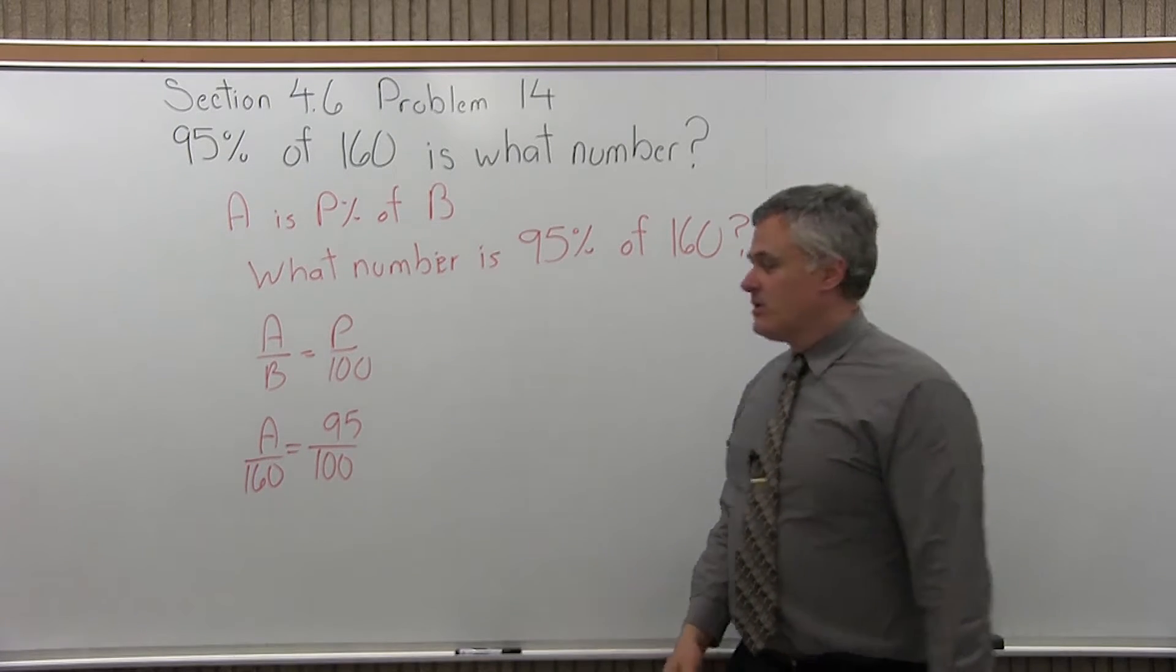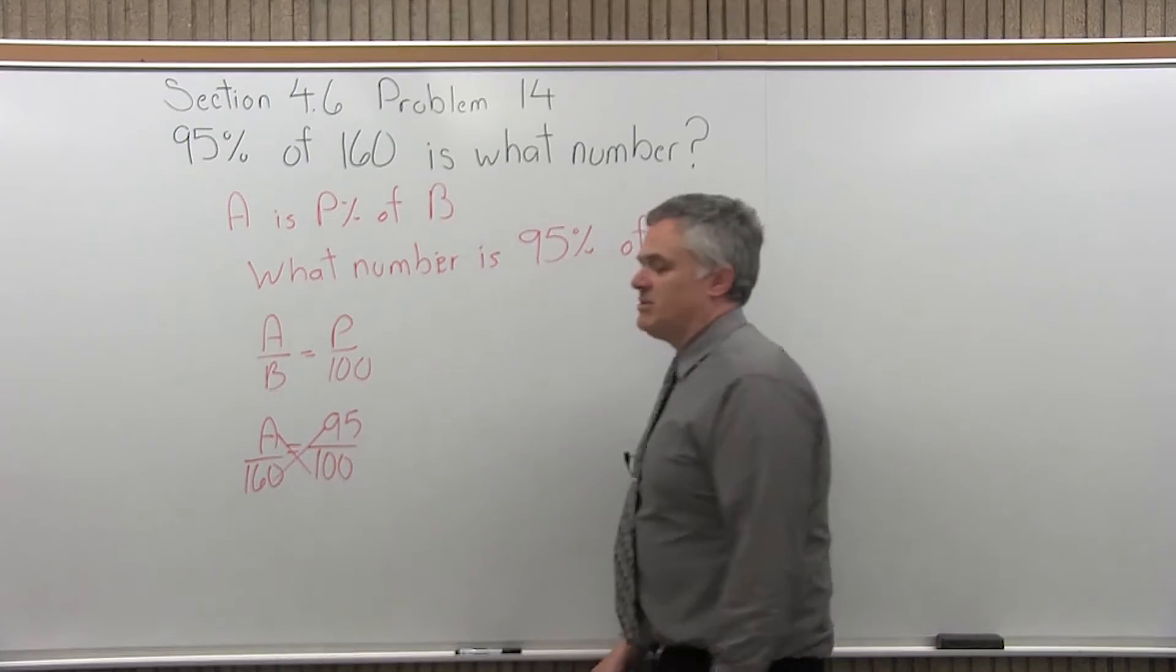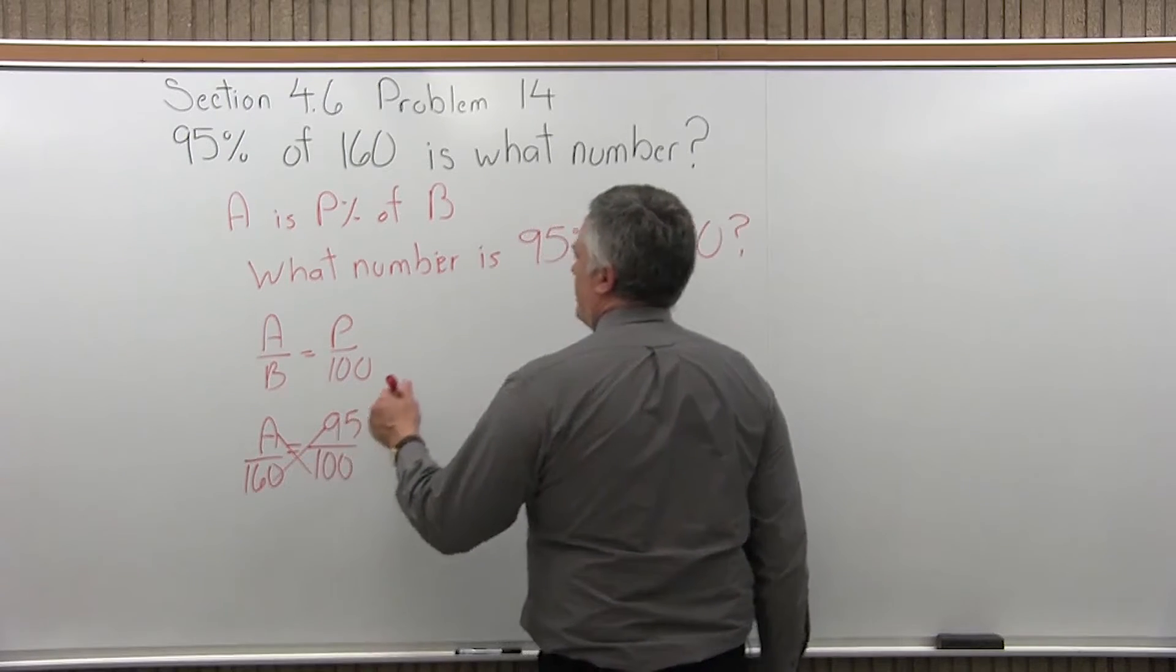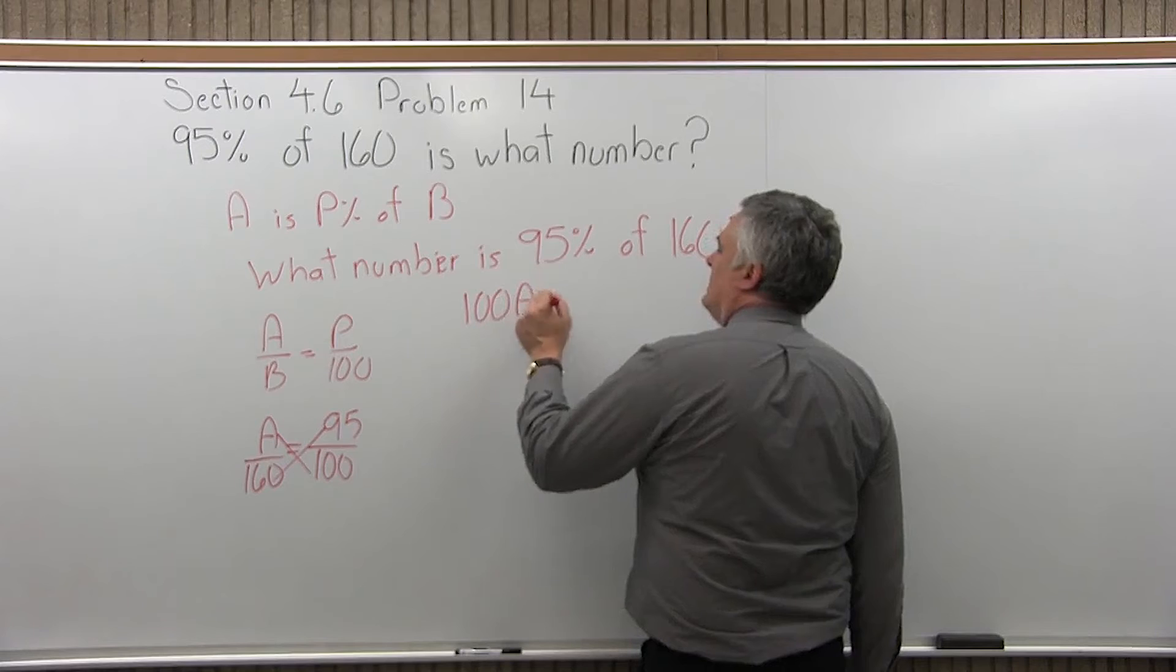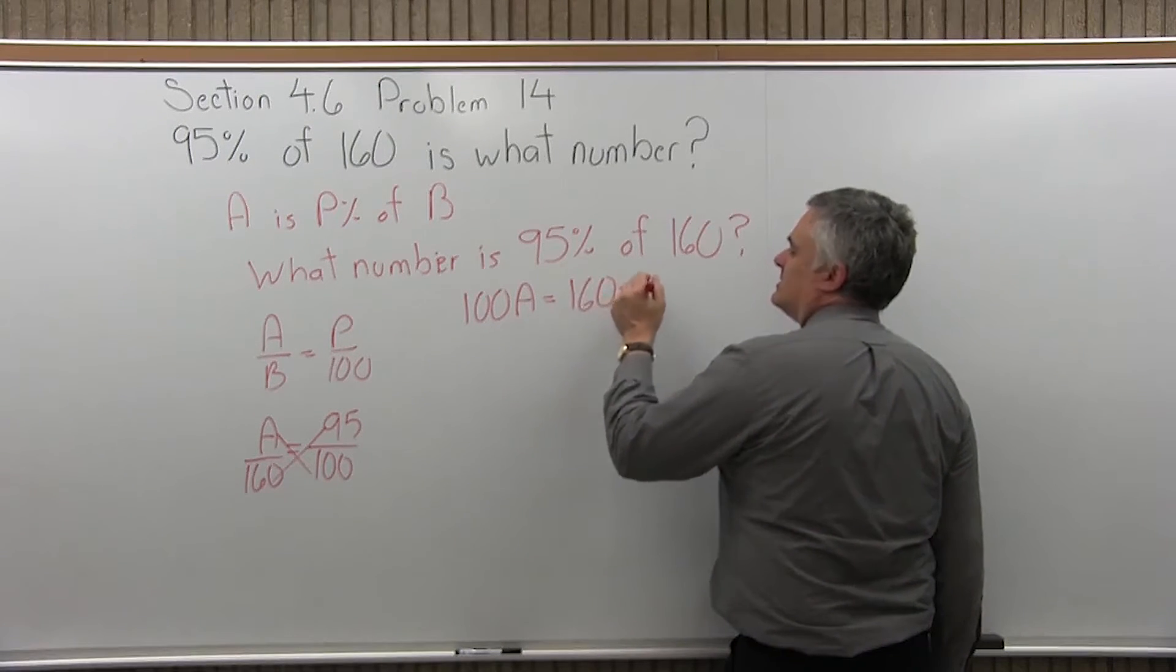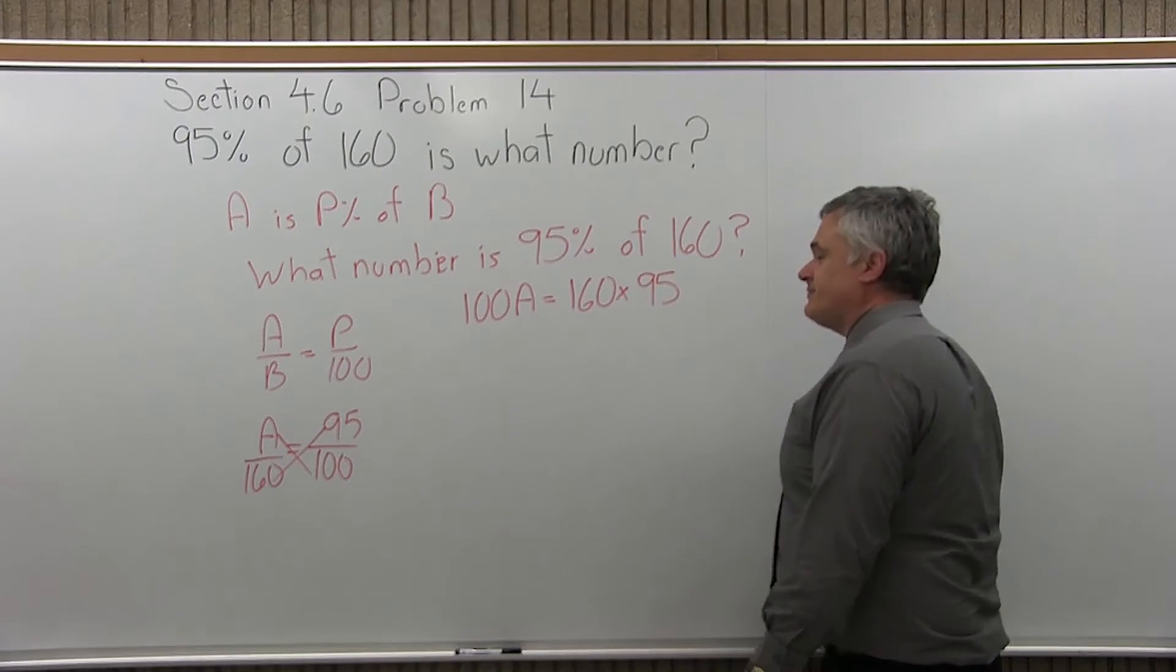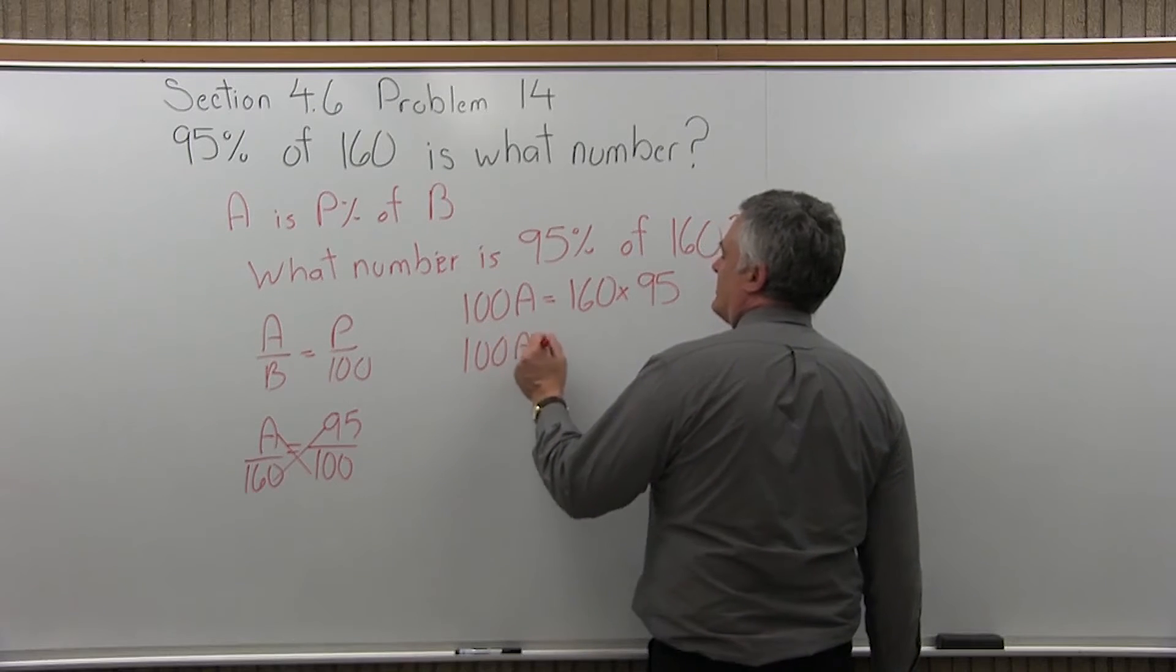So I have an equation with one unknown part, so I can solve that, and the way you solve it is you cross-multiply and then divide. So on one side I'll have A times 100, which I can write as 100A, equals on the other side 160 times 95. That's not a multiplication that can be done easily in your head. The 100A will stay for now.